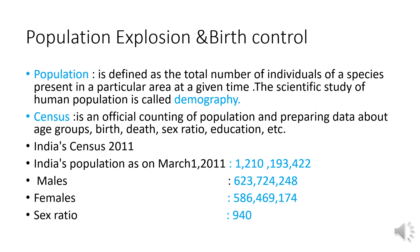India's population as of March 1, 2011 is given here. The sex ratio is 940, meaning for every 1000 males there are 940 females. In some states like Rajasthan where female feticide is very high, the number can be as low as 800 or 700 females per 1000 males. The government is planning measures to make this ratio equal.